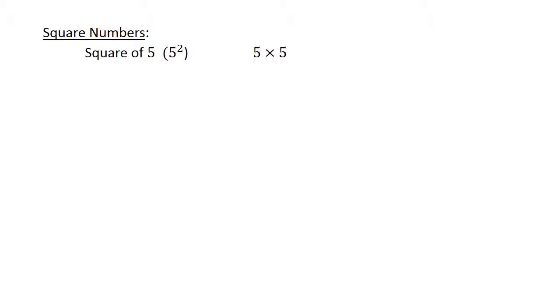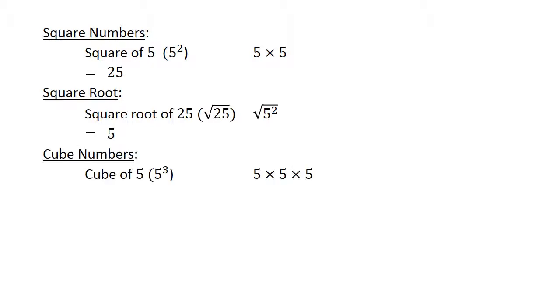Square numbers. The square of 5 equals 25. Square root of 25 equals 5. Cube of 5 equals 125, and the cube root of 125 equals 5.